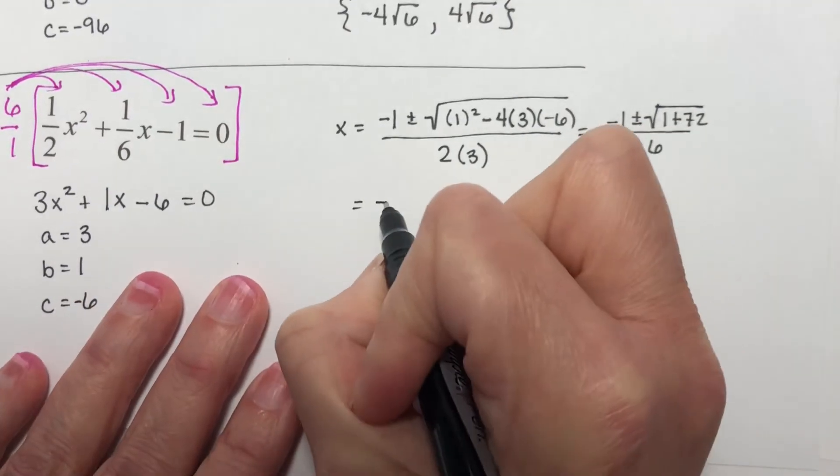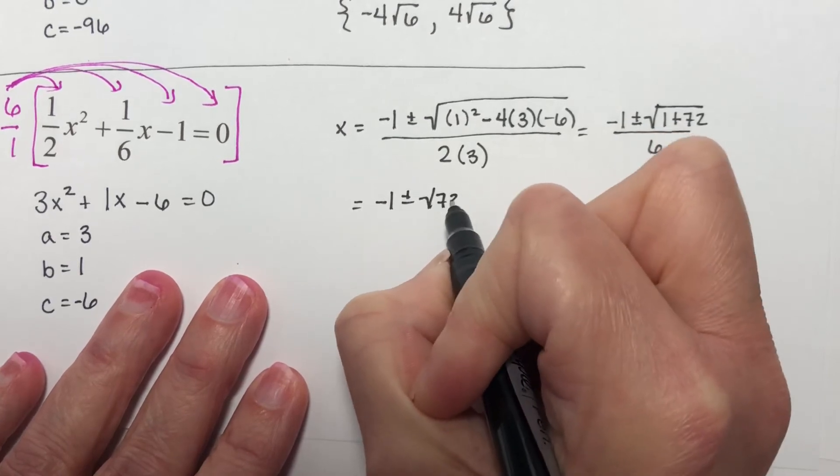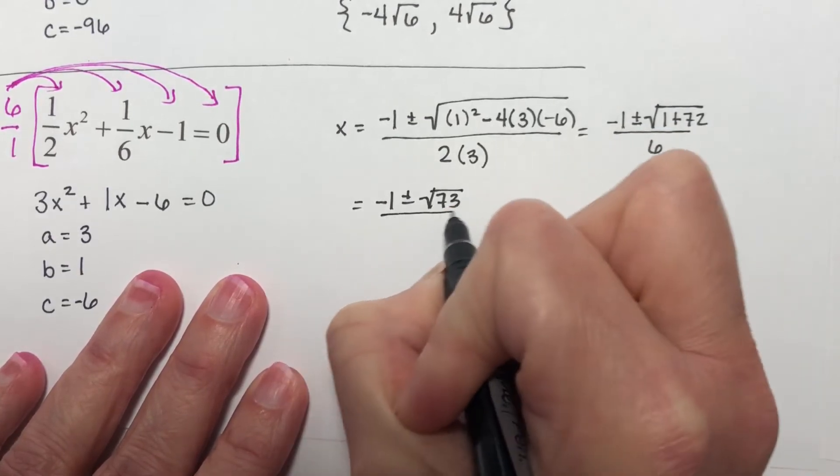So I have negative 1 plus or minus the square root of 73 over 6.